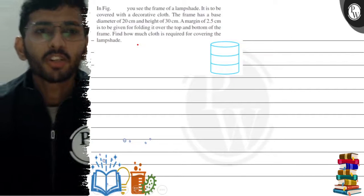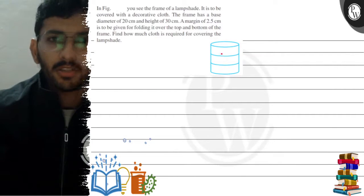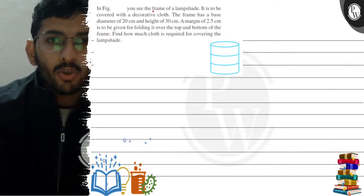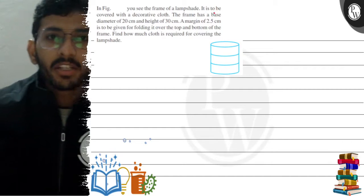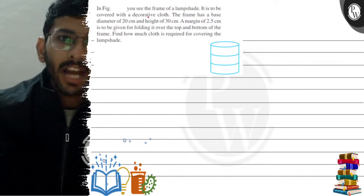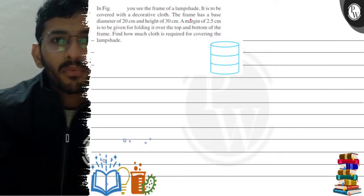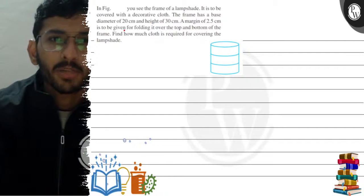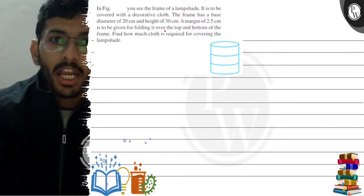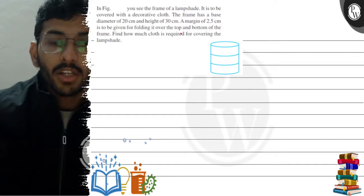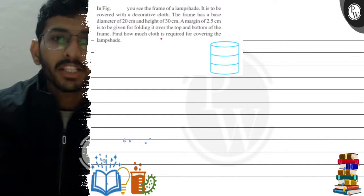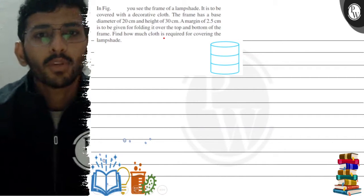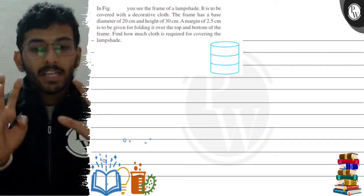Hello, let us read the question. In this figure, the frame of a lampshade is to be covered with a decorative cloth. The frame has a base diameter of 20 centimeters and a height of 30 centimeters. A margin of 2.5 centimeters is to be given for folding at the top and bottom of the frame. Find how much cloth is required for covering the lampshade.